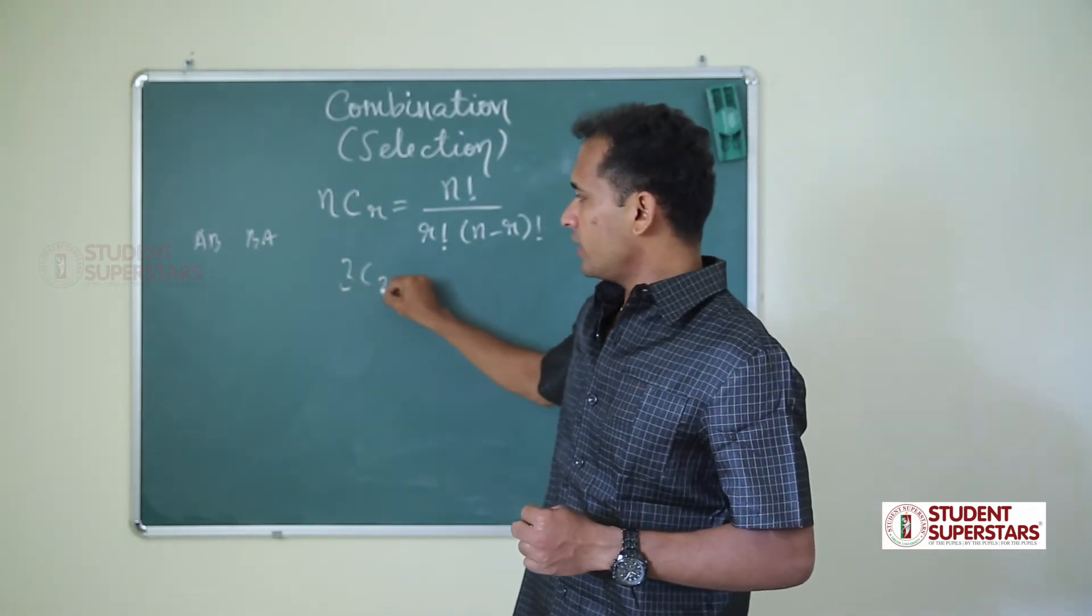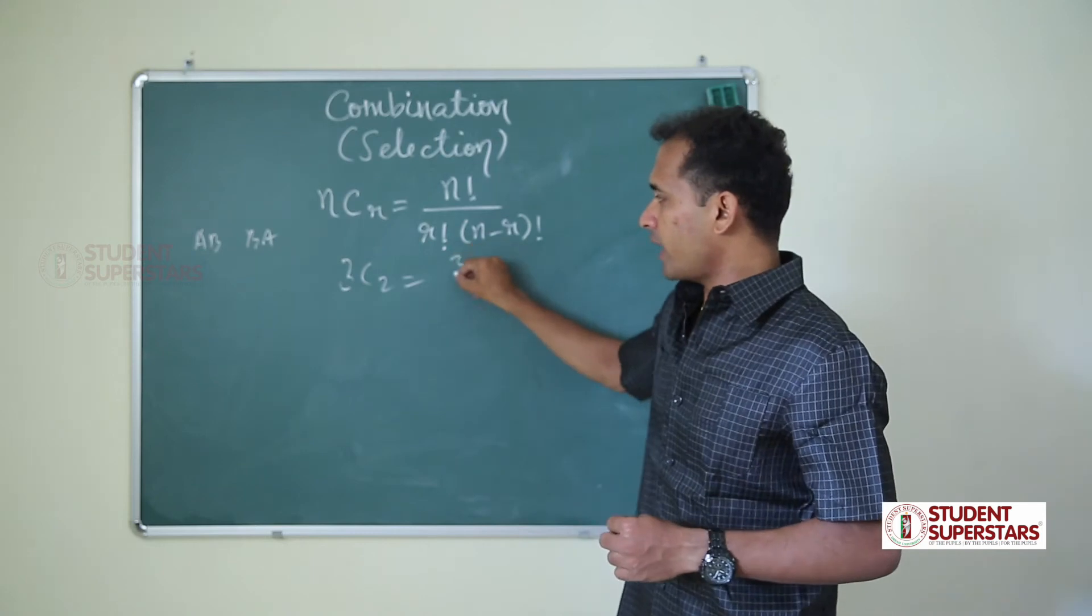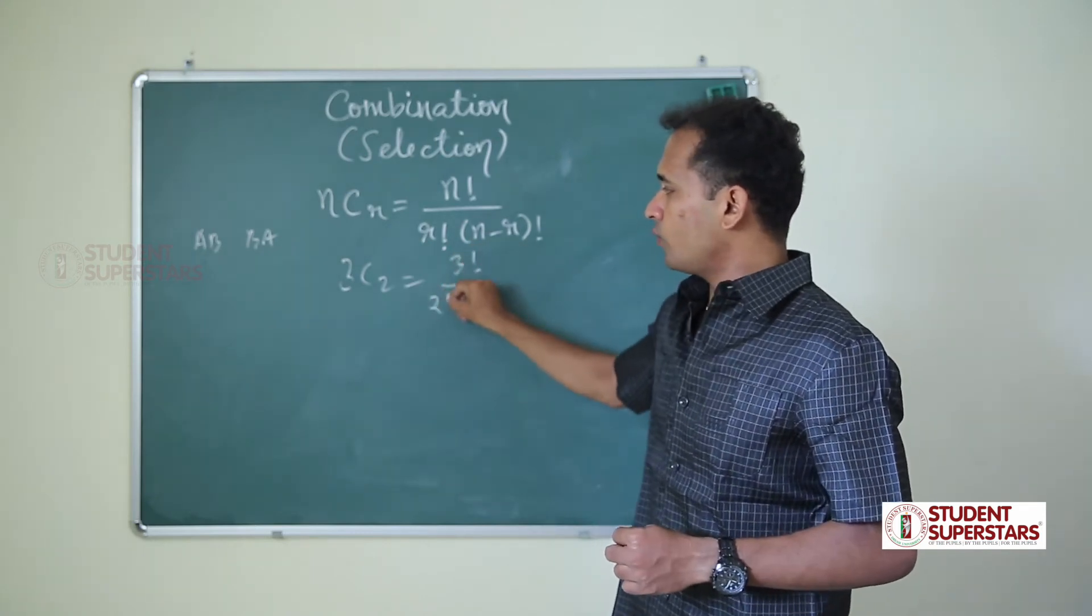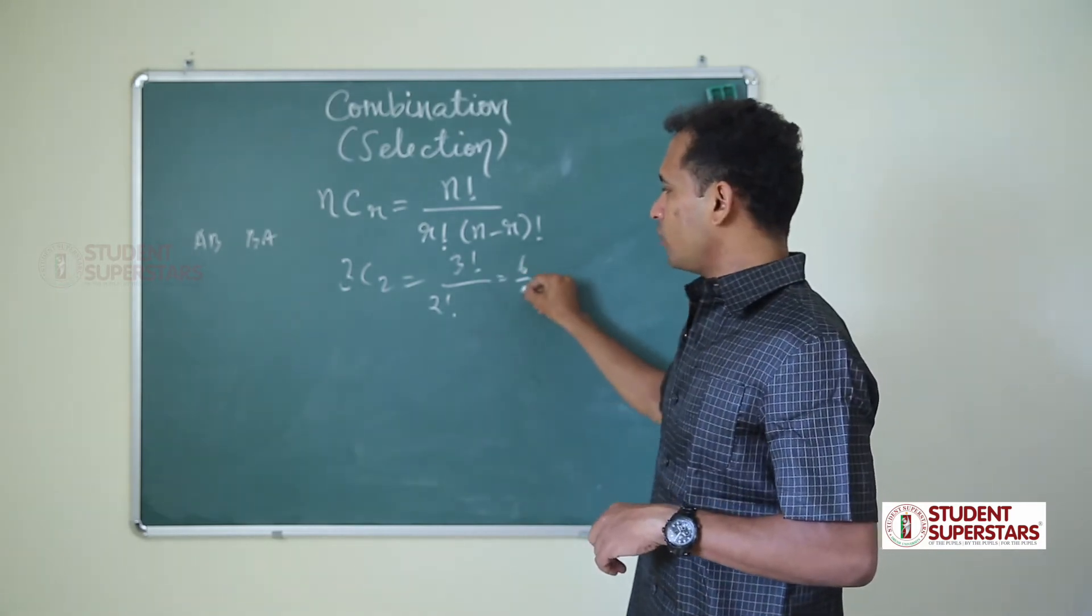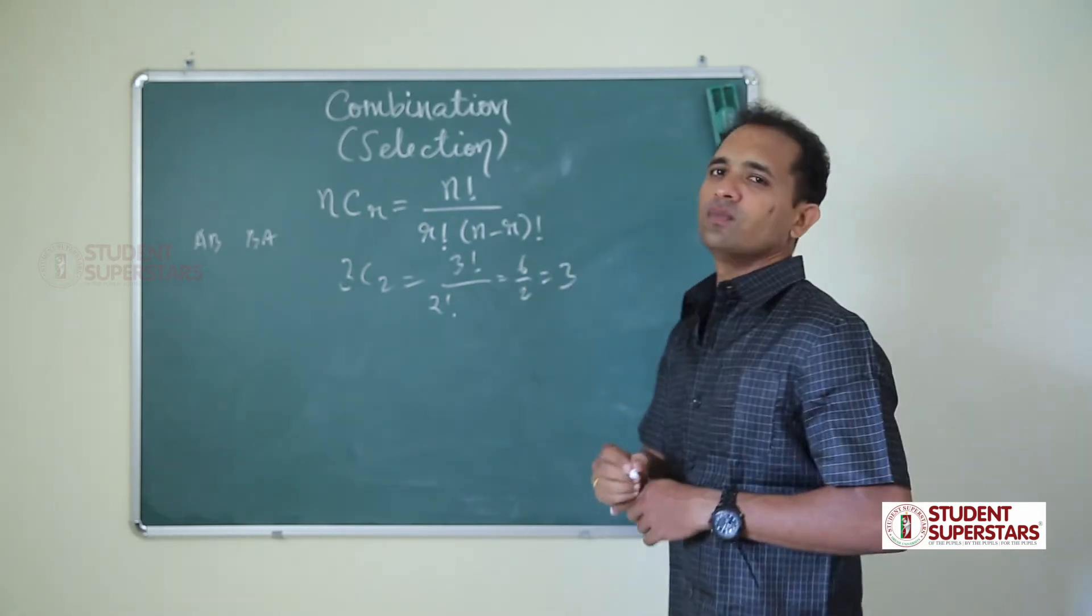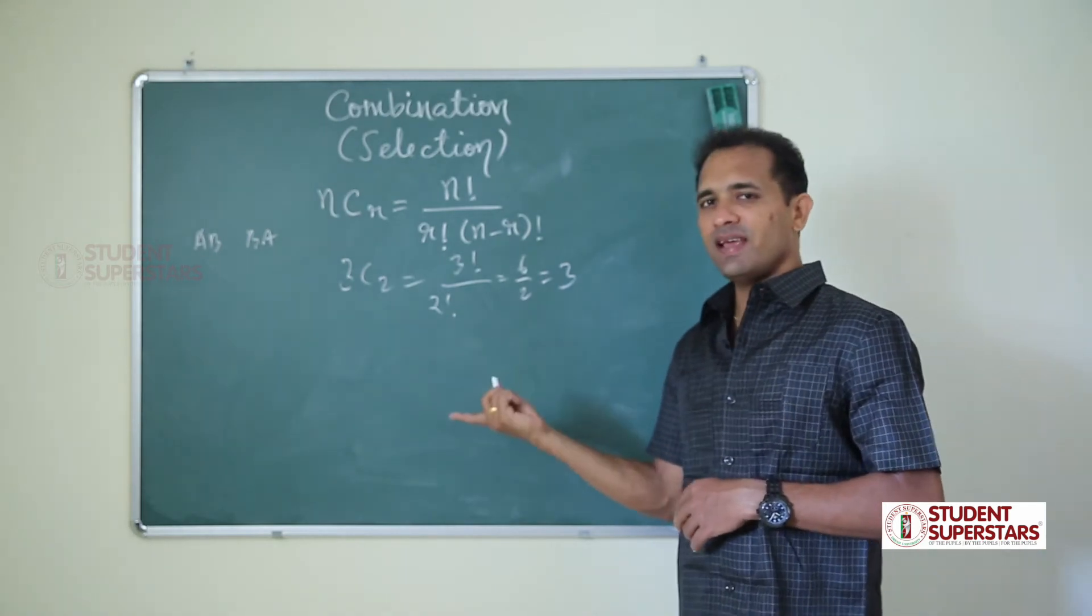Here, 3C2 is equal to 3 factorial by 2 factorial into 3 minus 2, 1 factorial. So, 6 by 2, which is 3. Which means A,B; B,C; and A,C.